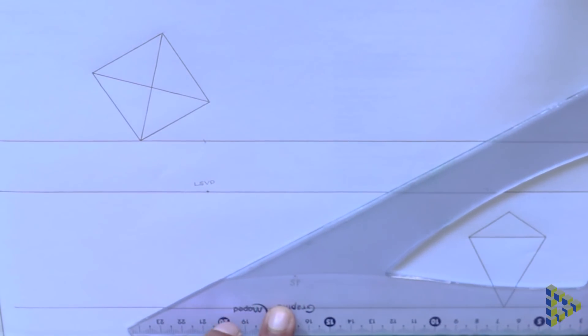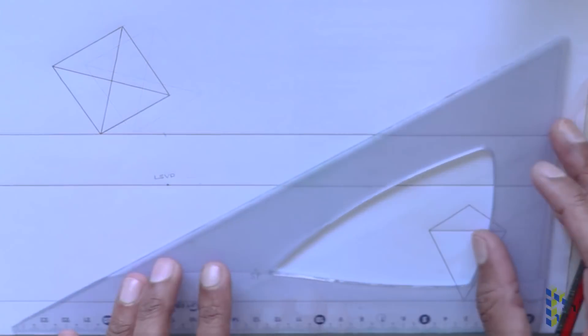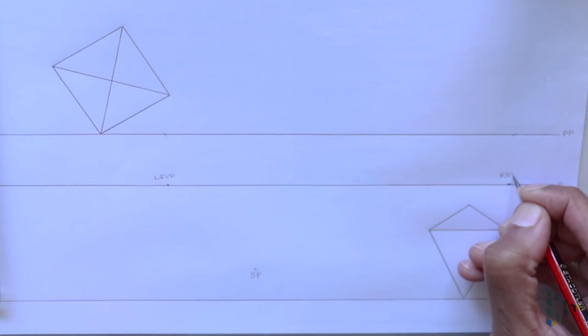We do the same using the right side adjacent edge which is rotated 30 degrees to the horizontal to get our right side vanishing point.